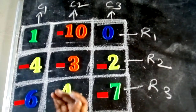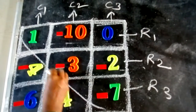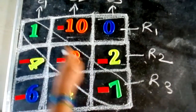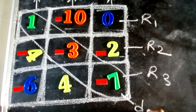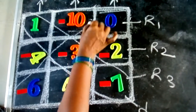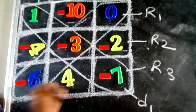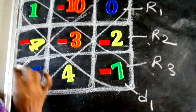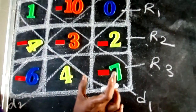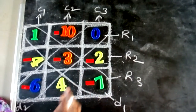Now we want diagonals also. Where is the diagonal? This corner and this corner — you take these corner values. This one is diagonal 1. Another diagonal, another corner — this is called diagonal 2. So total: three rows, three columns, and two diagonals.